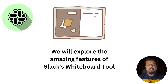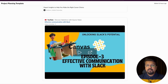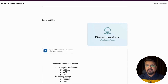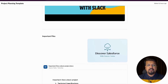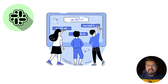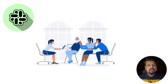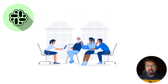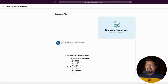In this episode we will explore the amazing features of Slack's whiteboard tool called Canvas. This is a powerful feature that allows us to do much more than just regular messaging. I will walk you through various examples and use cases. Canvas in Slack serves as an interactive whiteboard where you can collaborate with other users on projects, brainstorm ideas, and more.